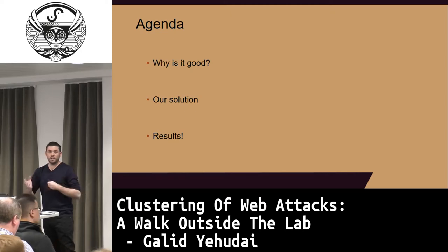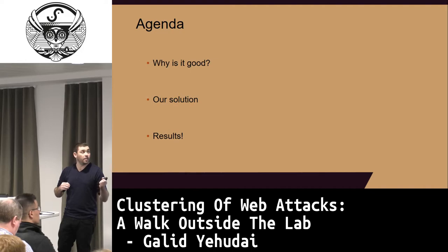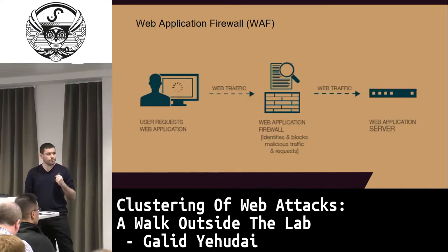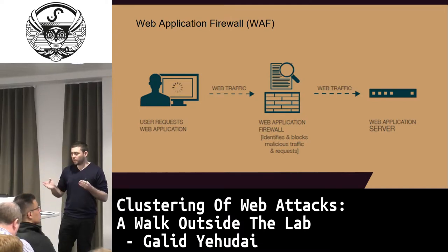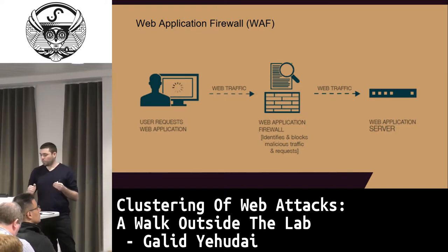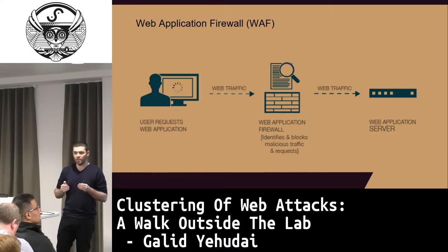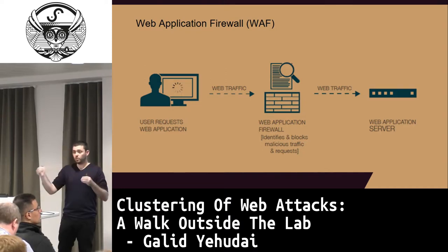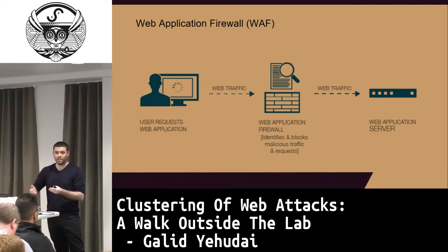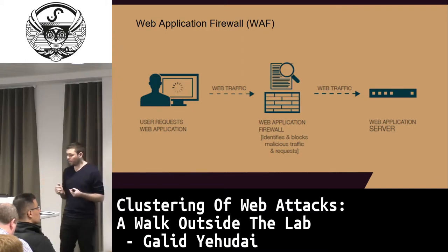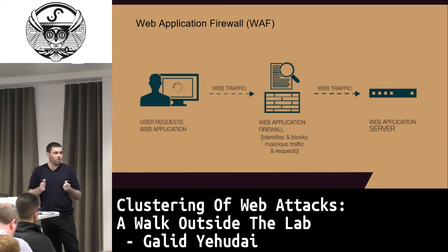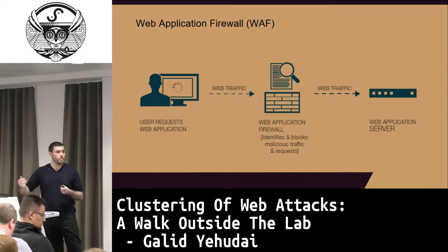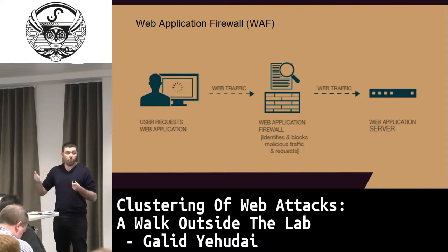Let's start with the background about how we protect web applications and what alerts we find. One way to protect a web application is to use a web application firewall, or WAF. A WAF is a network component that filters requests going to the web application. Every request sent from the outside world is filtered by the WAF — it decides whether it's an attack and stops it, or a legitimate request and lets it through. Besides stopping attacks, the WAF also reports them, and the user gets a log of all the alerts.